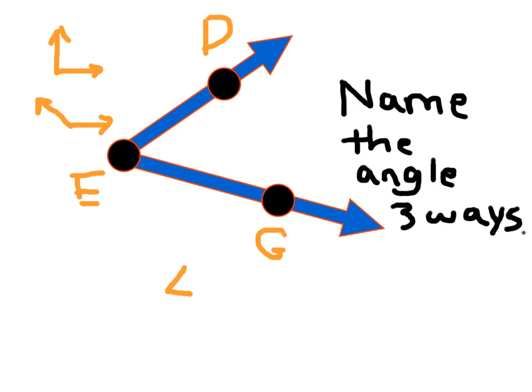For this angle, we can call it by its vertex. Which of these points, D, E, or G, is the vertex? It is point E, so we can call it angle E. E is what we call our vertex.